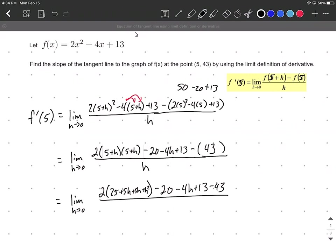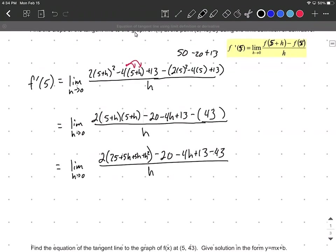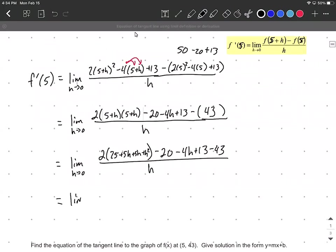Distributing the 2 in the numerator: 50 + 20h + 2h² - 50 - 4h, all over h. The -50 comes from combining like terms: 20 - 20 + 13 - 43.